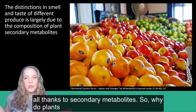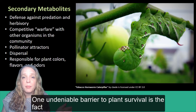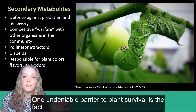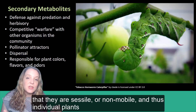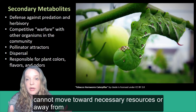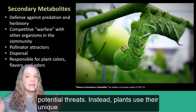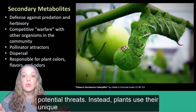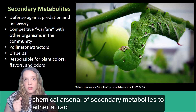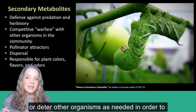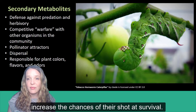So why do plants make these compounds? One undeniable barrier to plant survival is the fact that they are sessile, or non-mobile, and thus individual plants cannot move toward necessary resources or away from potential threats. Instead, plants use their unique chemical arsenal of secondary metabolites to either attract or deter other organisms as needed in order to increase the chances of their shot at survival.